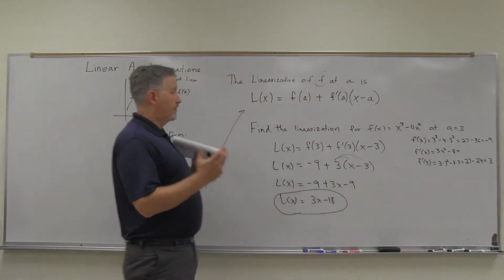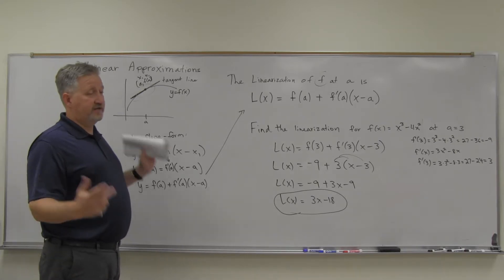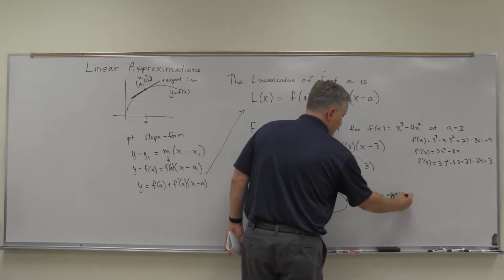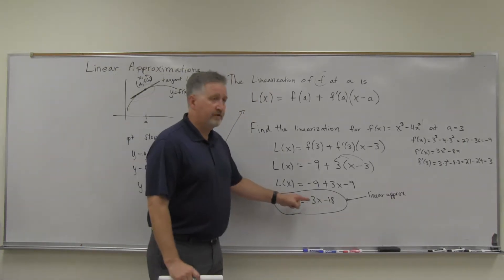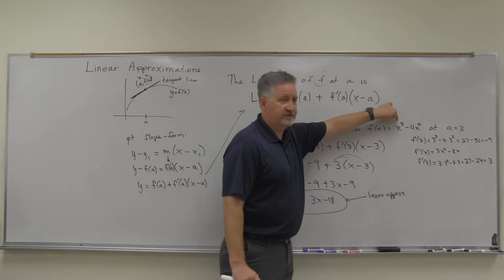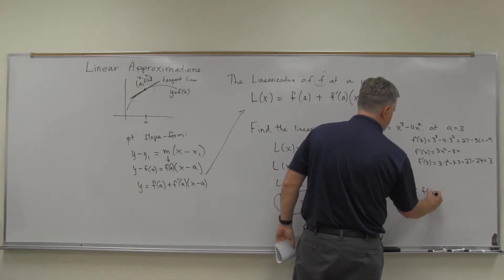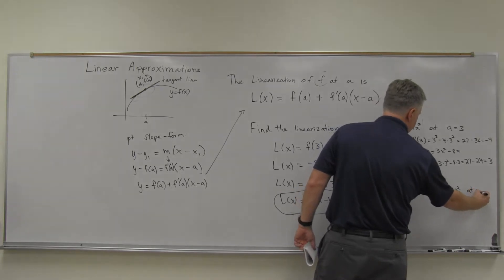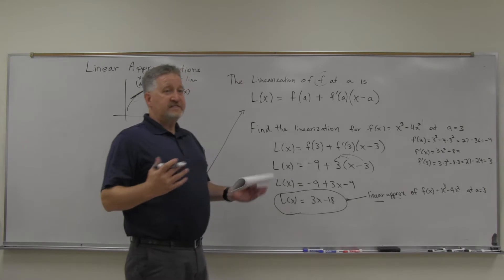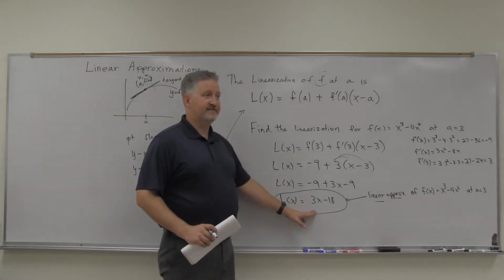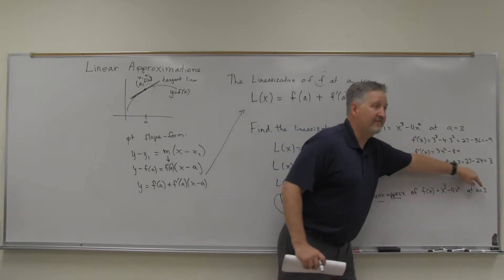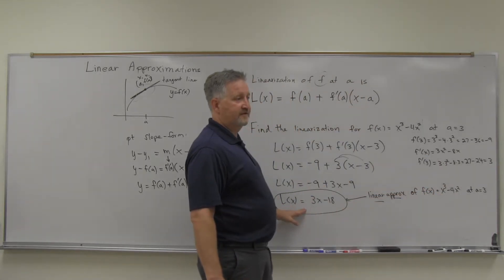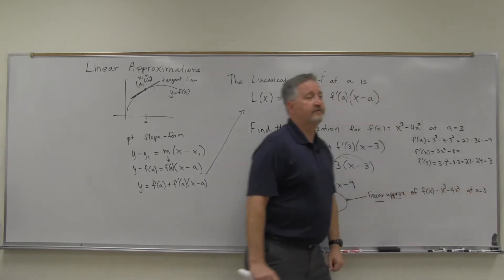So this is a linear approximation of my original function, which is a cubic, at a equals 3. What that means is I can use this linear approximation to approximate the original function if my x values are around 3.